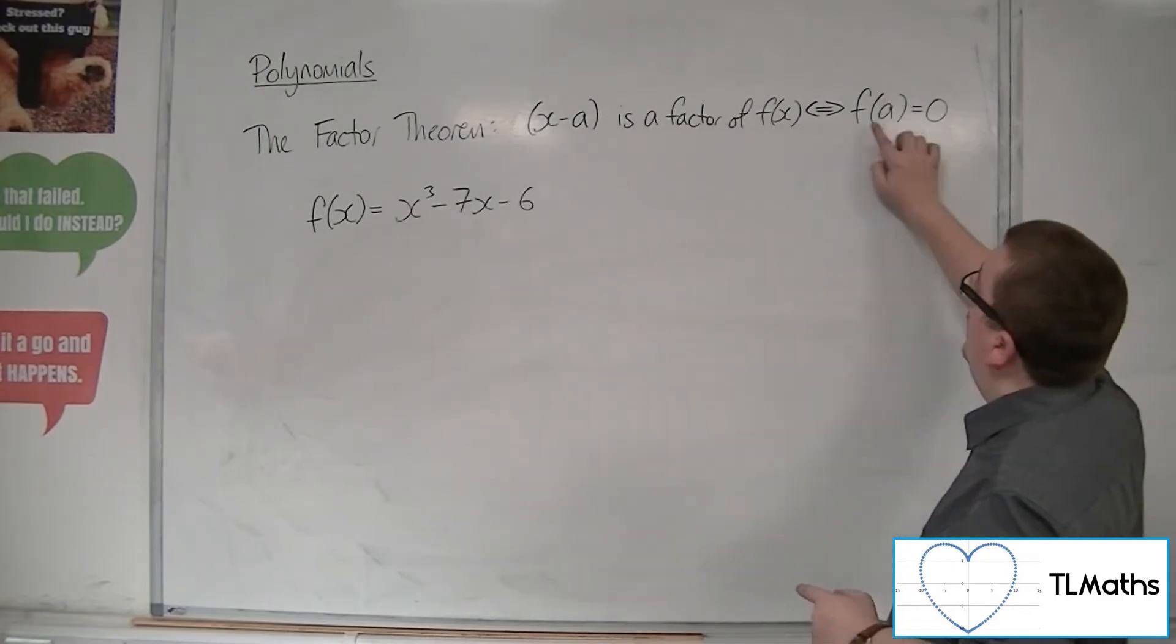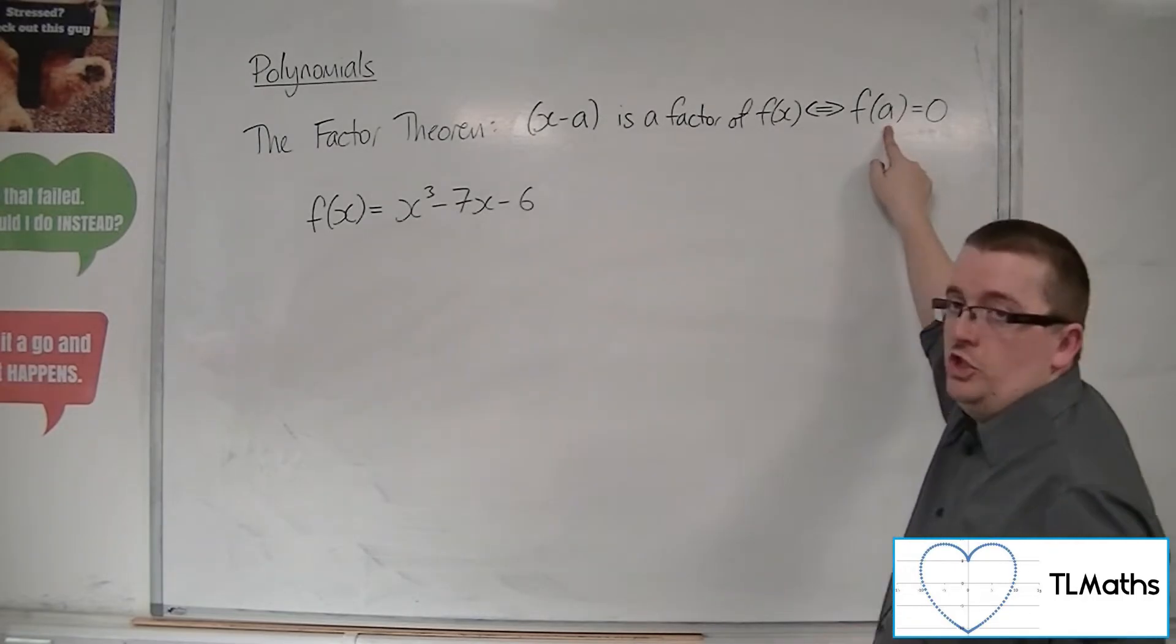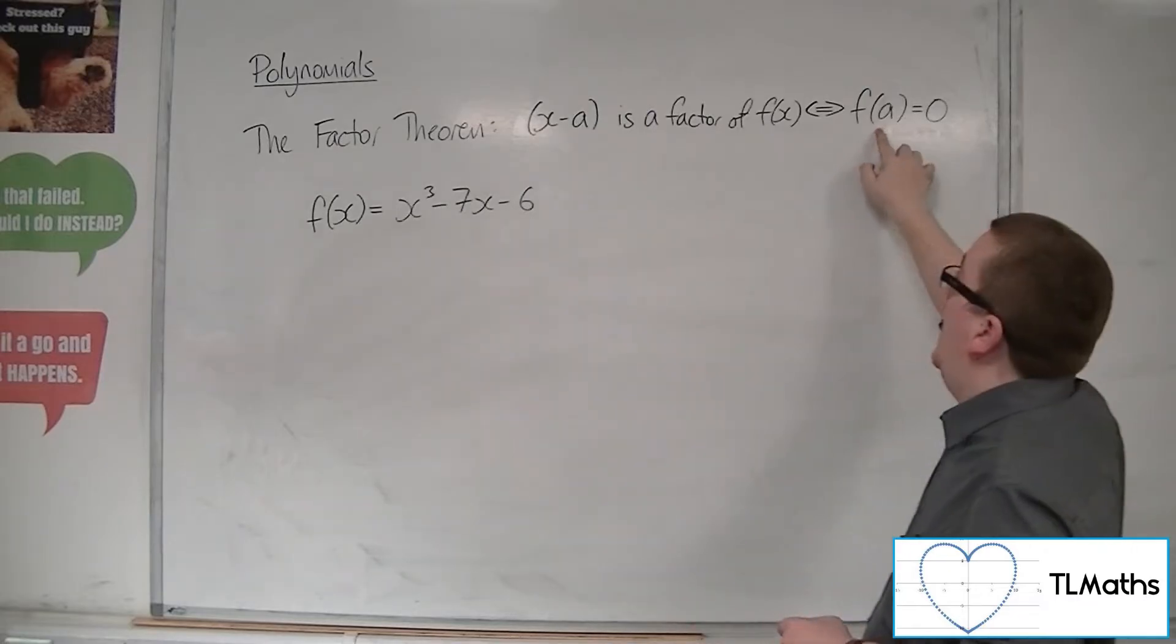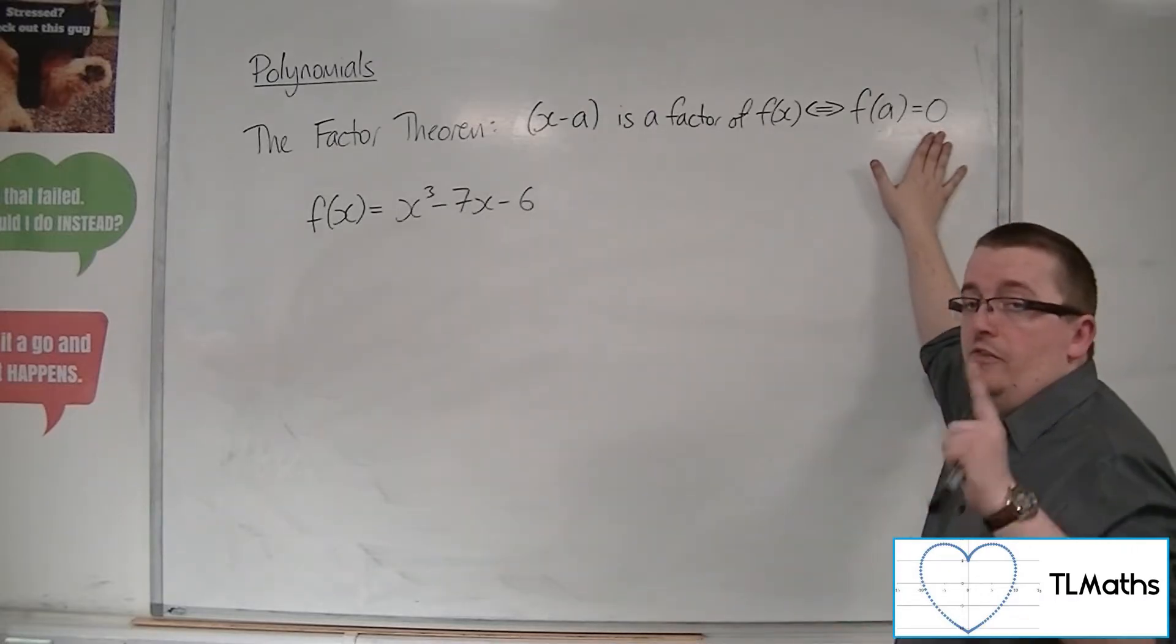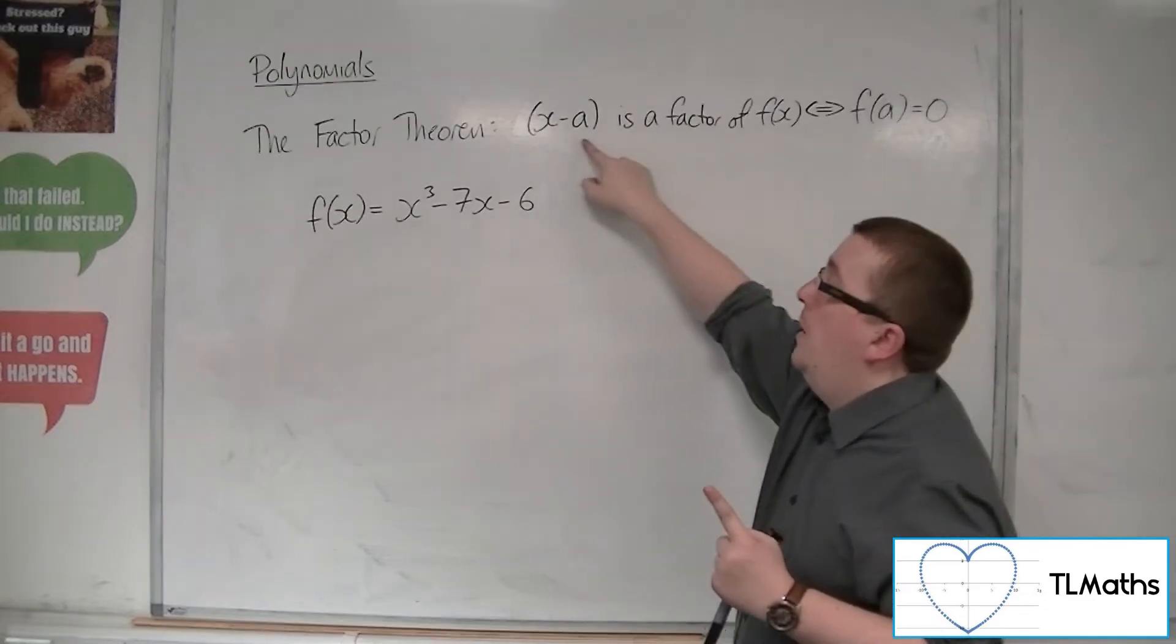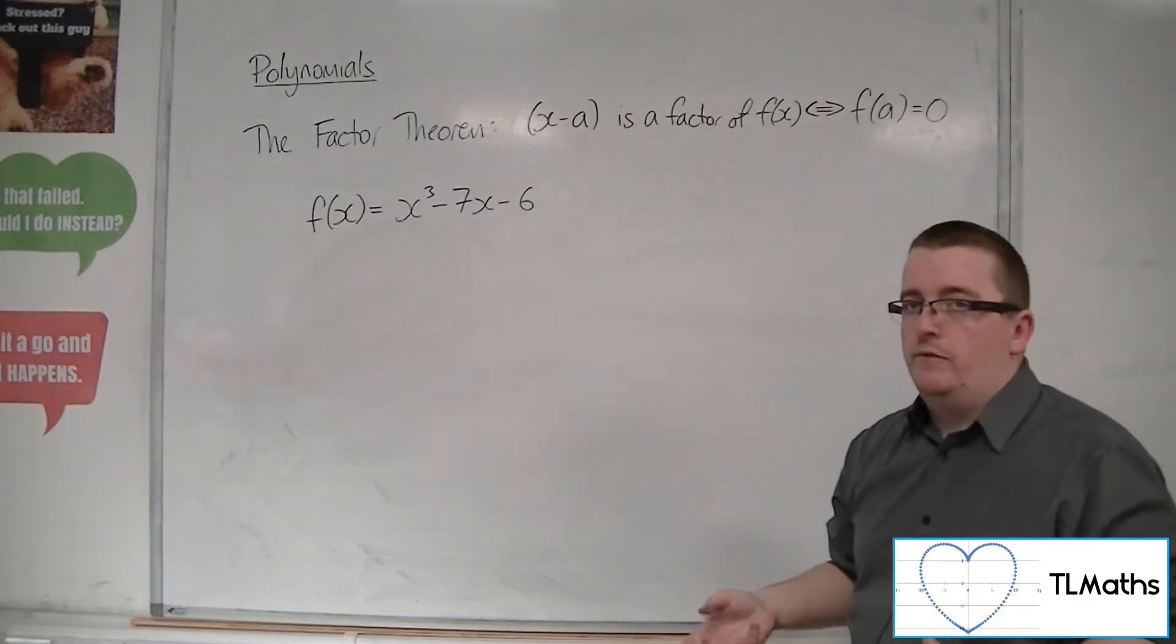So if you know that f of a is 0, if you know that when I substitute in 5, I get 0 at the end of it, then I know that x minus 5 will be a factor of f of x.